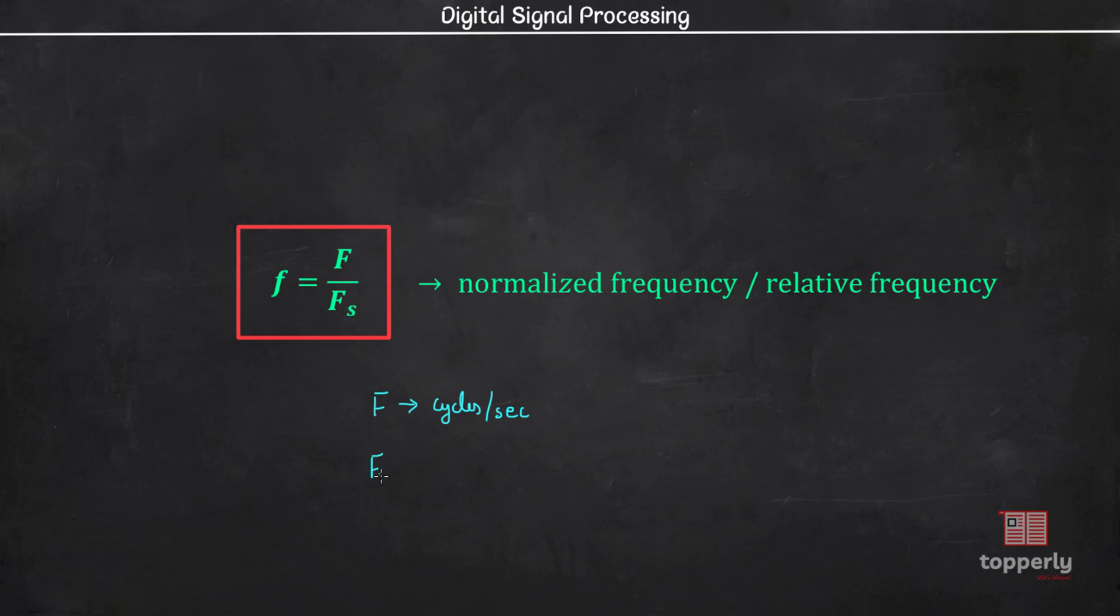So the unit of small f is capital F per Fs, which is cycles per second over samples per second, which simplifies to cycles per sample.